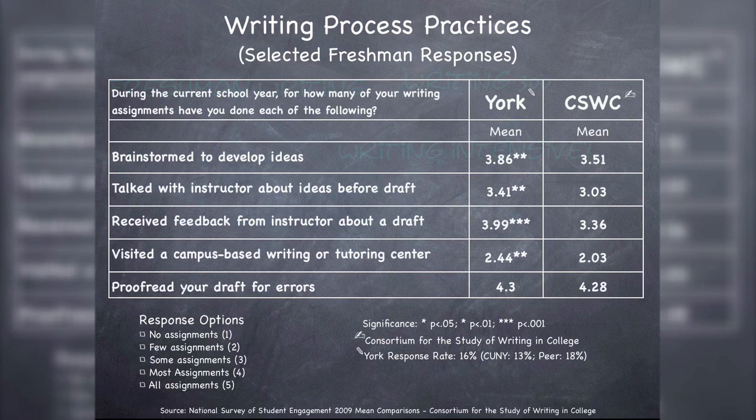What's really worth noting is that on each one of these — with the exception of proofreading — York College freshman responses exceed the consortium's overall response. So our students are engaged in these activities at rates that exceed the national average, with the exception of proofreading, where we are in line with the national average. These are freshmen, and I think this is at least in part an artifact of freshman writing — students are mostly thinking about freshman composition when they respond. So this is really good news about our students' writing practices as freshmen.